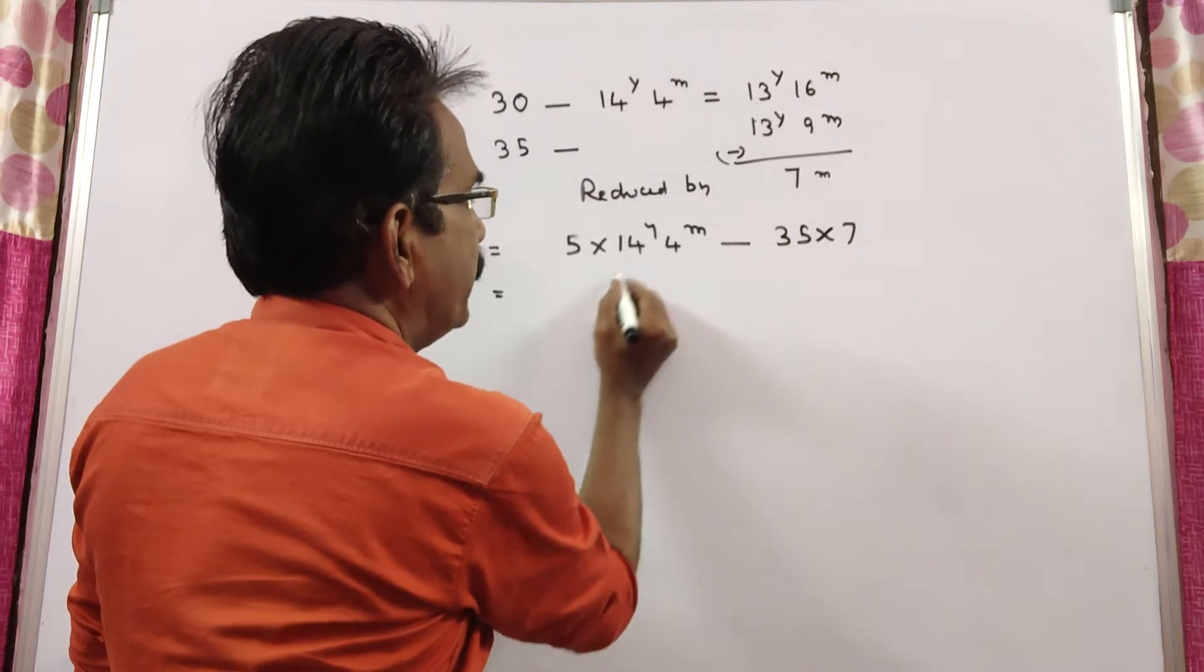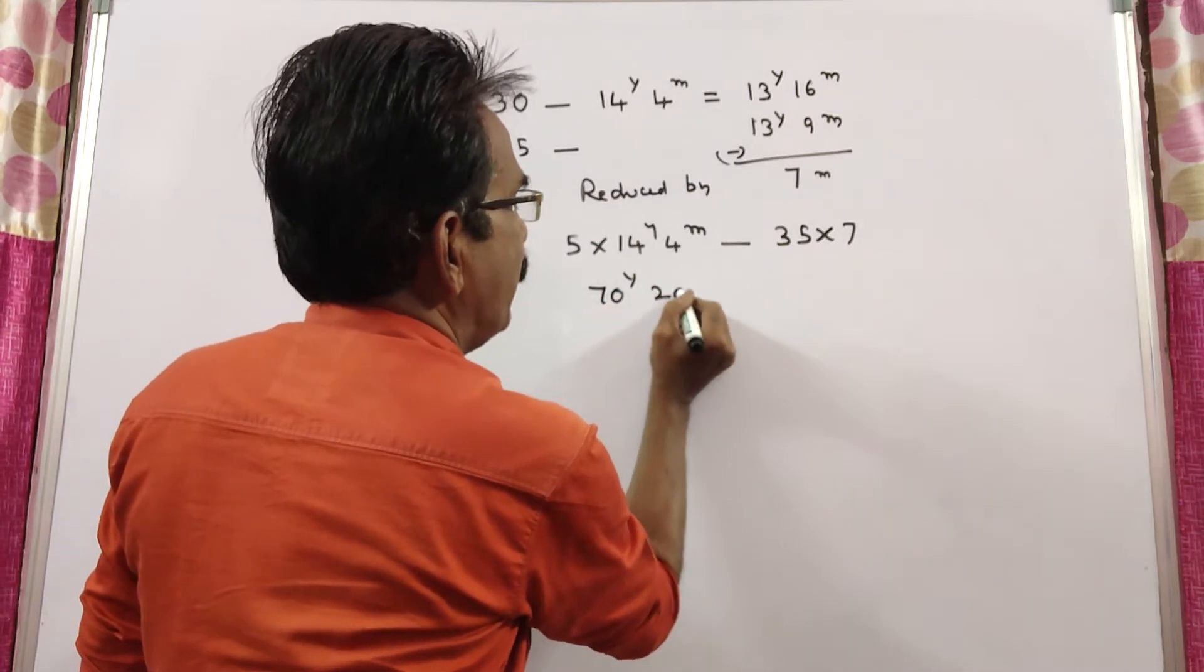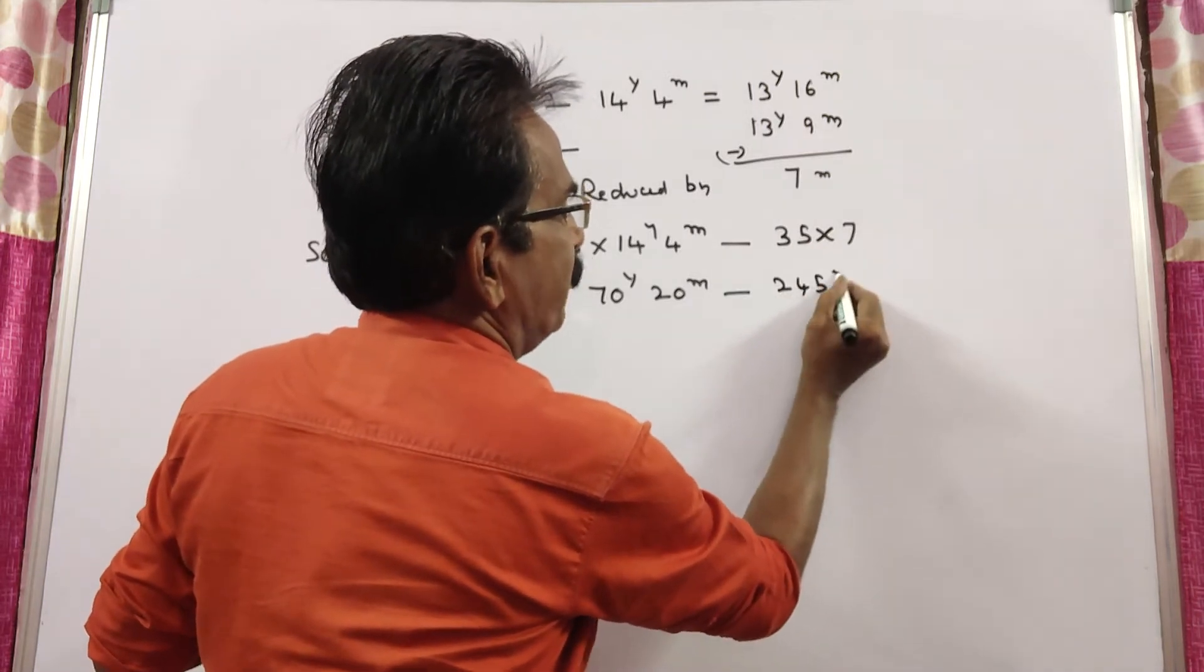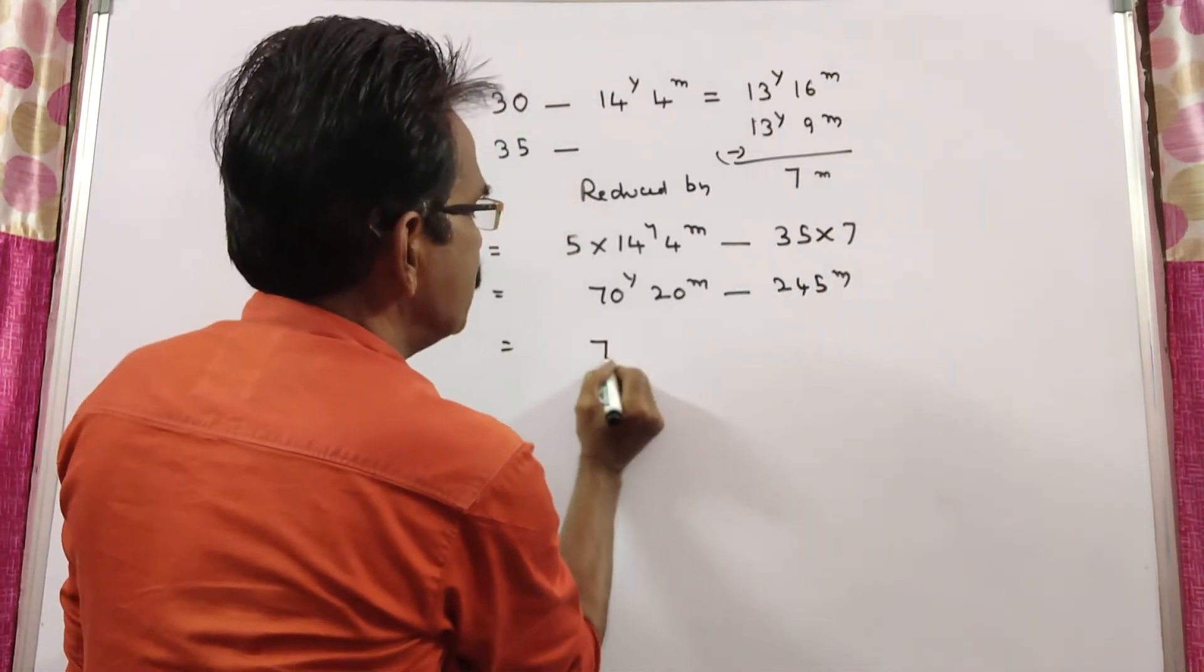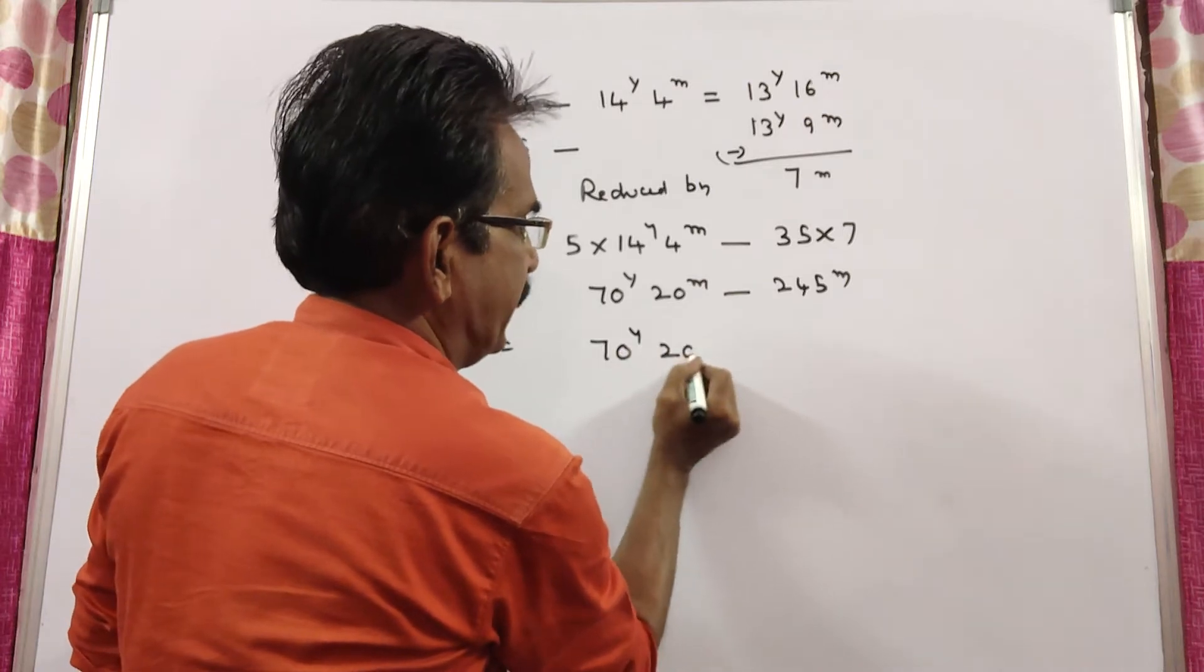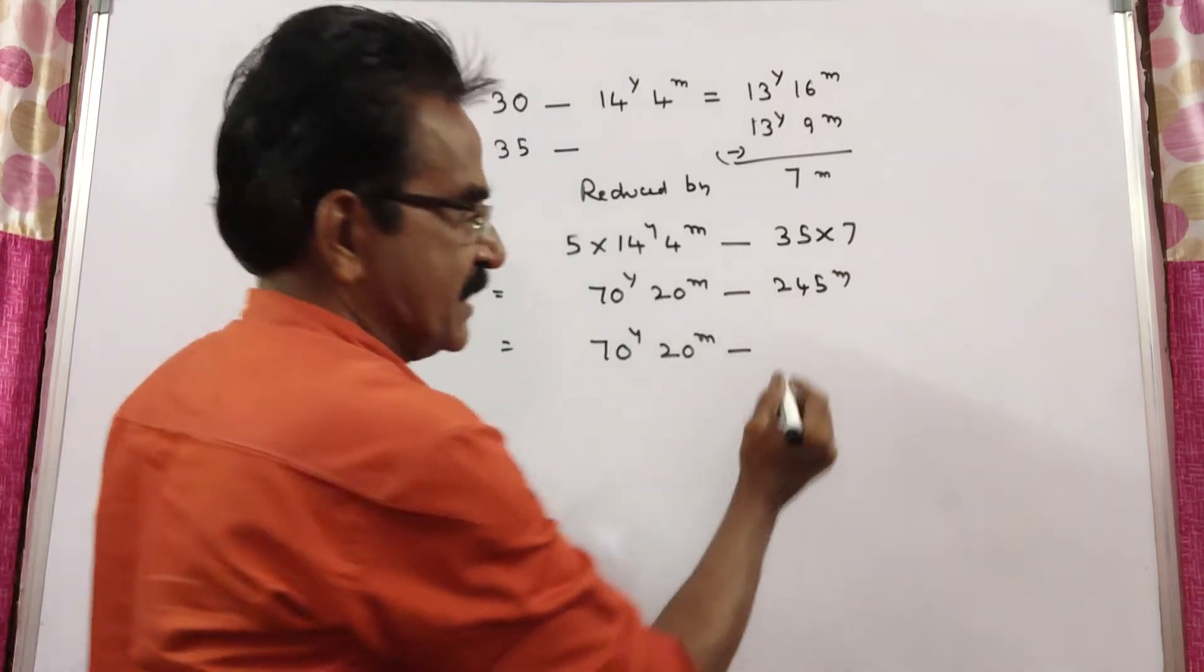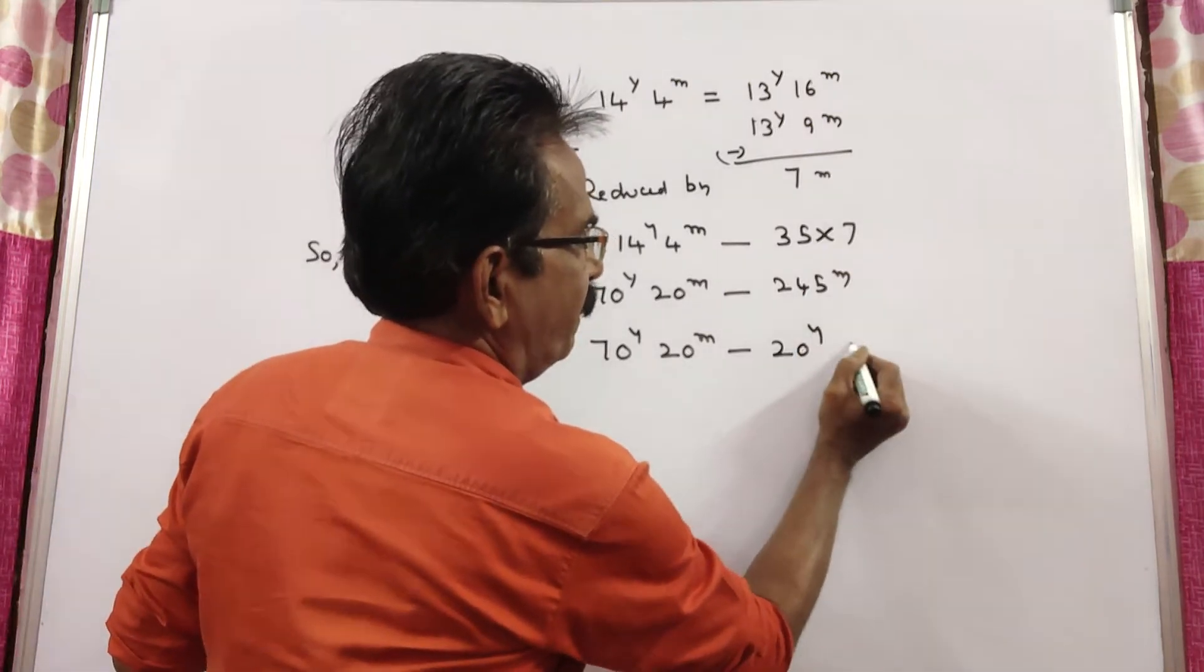So, 5 times 14, 70 years, 5 times 4, 20 months. 7 times 35, 245 months. This is equal to 70 years, 20 months minus 245 months, which means 20 years, 5 months.